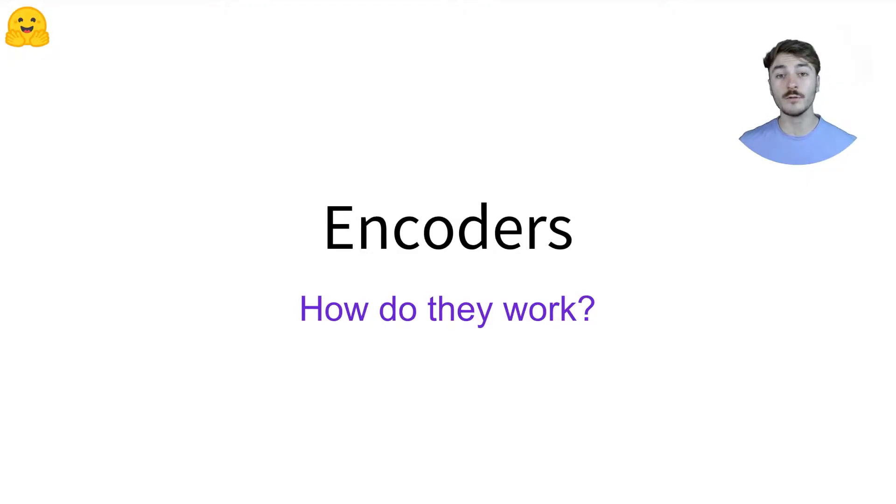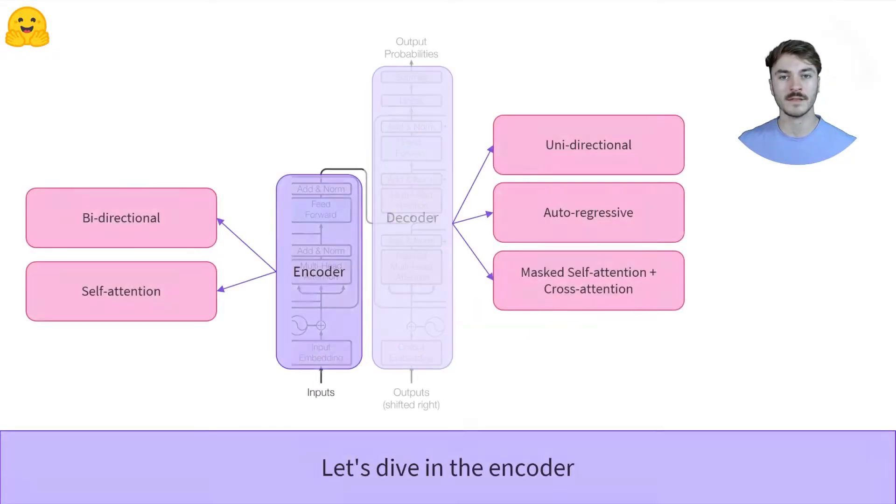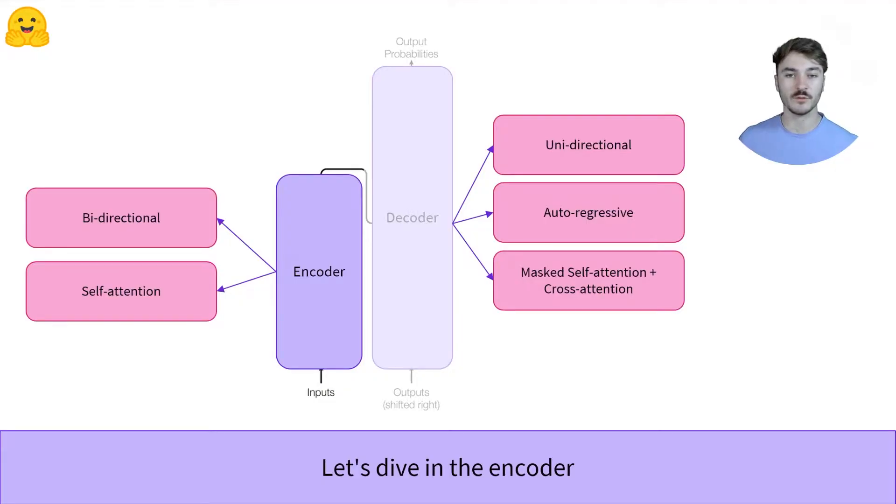In this video, we'll study the encoder architecture. An example of a popular encoder-only architecture is BERT, which is the most popular model of its kind. Let's first start by understanding how it works.